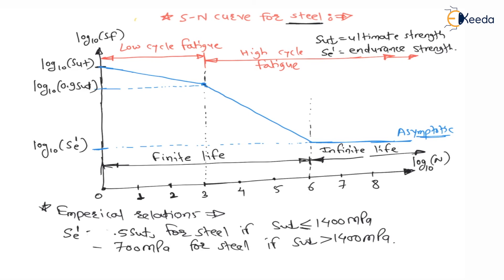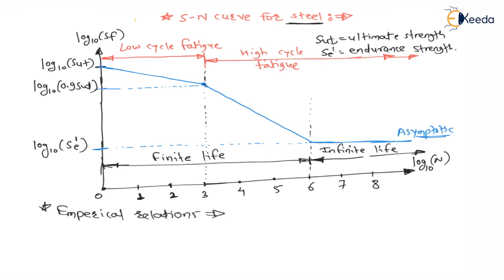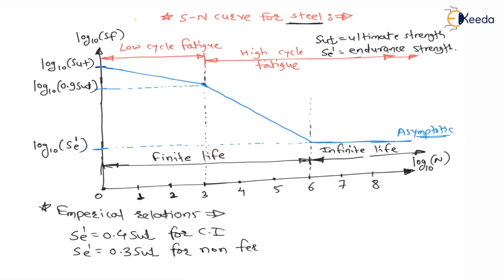The second empirical relation: SE' = 0.4 SUT for cast iron. The third: SE' = 0.3 SUT for non-ferrous materials. Steel and cast iron are ferrous materials (containing iron), whereas non-ferrous materials such as pure aluminium follow SE' = 0.3 SUT.